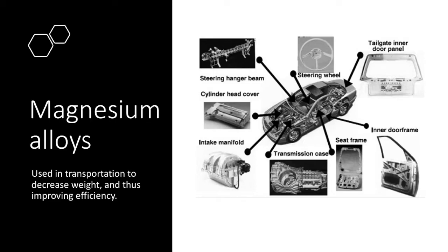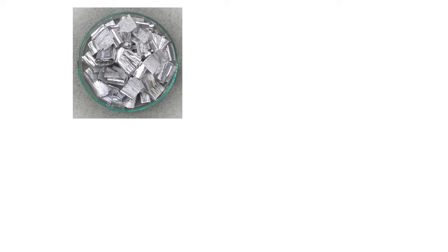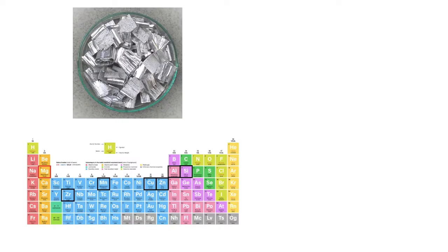This presentation is about magnesium alloys. Magnesium is commonly used as a base with other metals to form alloys. One of the methods this can be done is by die casting.